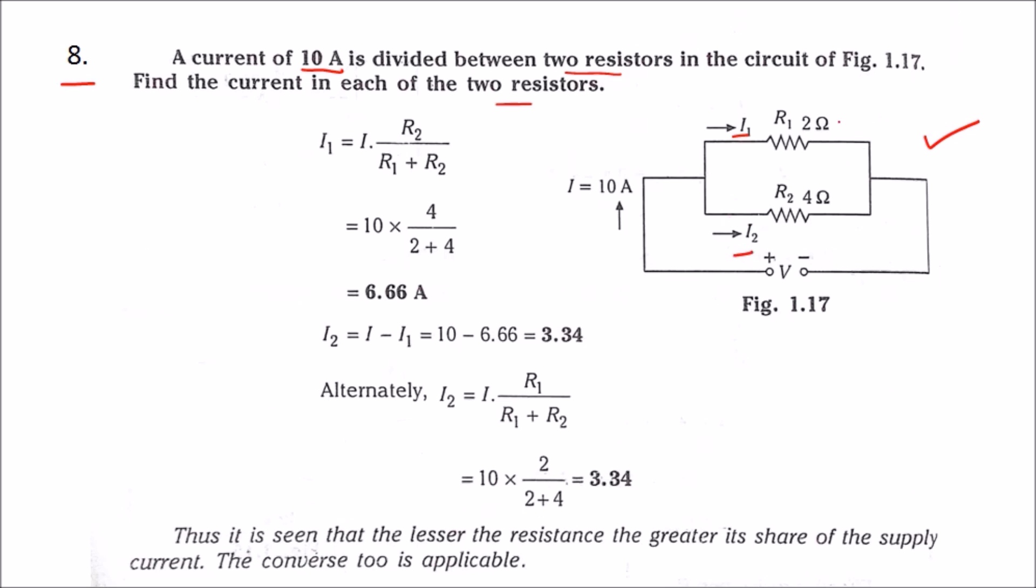In the previous problem we saw that r1 and r2 were equal, that is 2 ohms and 2 ohms. Here the two resistance values are different. Here r1 is 2 ohms and r2 is 4 ohms. Therefore, the current will not be equal, i2 and i1 will not be equal, so we need to calculate.